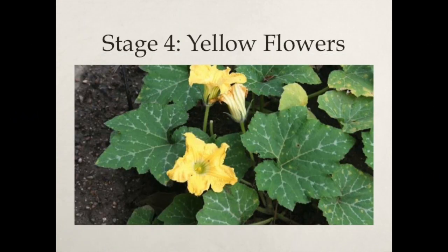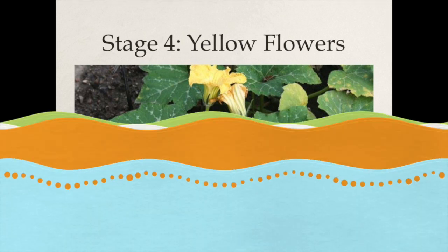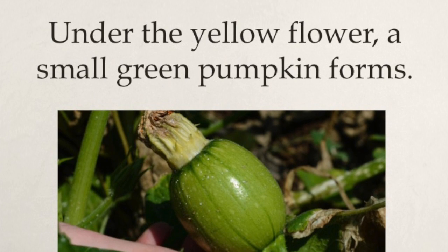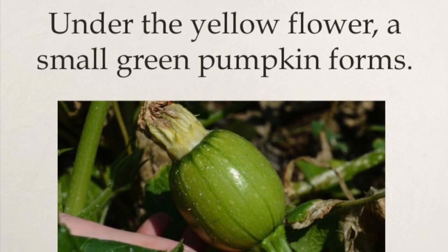If you have a healthy vine growing in your garden, you'll start to see yellow flowers bloom. And if those yellow flowers become pollinated by birds or bees passing by, underneath that yellow flower, a small green pumpkin starts to form.